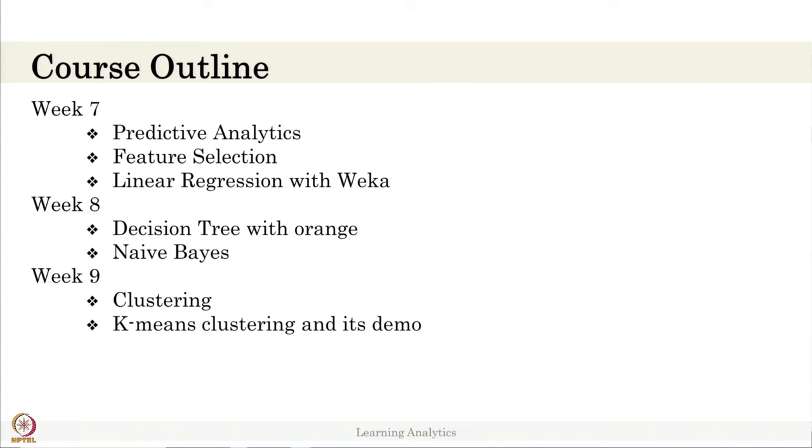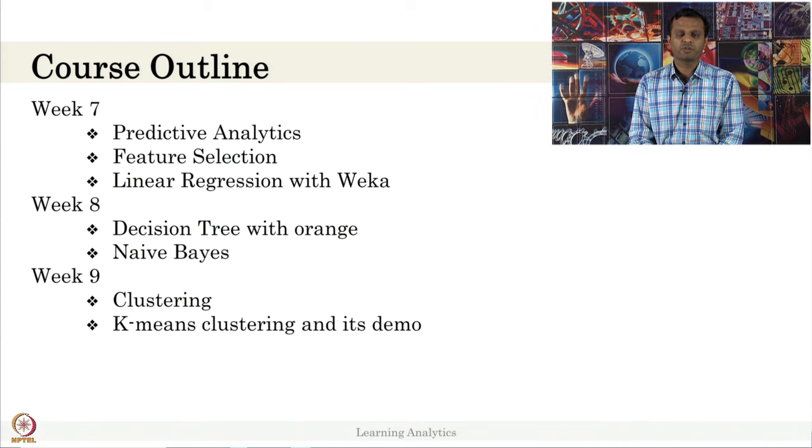In week eight, we will talk about decision tree and we will explain this with Orange. So whenever we have a demonstration, when we are talking about explaining a particular algorithm with a tool, which means we will have course assignments. So you have to use the tool and we provide data. Using that data, you have to predict something, you have to create something and report that as answers. So when we are talking about demonstration of tools, we will be having assignments in each week.